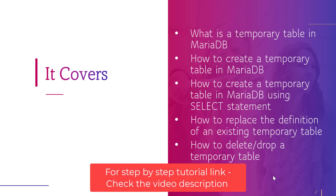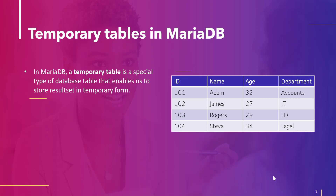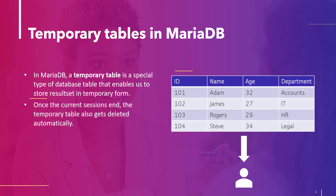A temporary table in MariaDB is just like a standard table which we can use to store results for a temporary period of time. It is a special type of database table that enables us to store a result set in temporary form. However, the scope of this temporary table is restricted to the current session in which it is created. Once the session ends, the temporary table also gets deleted. The main purpose is to store instant results in the form of a table.